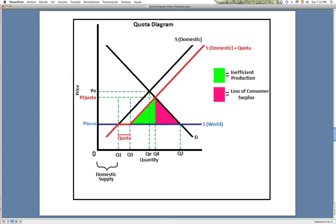The deadweight loss of welfare can be divided into two areas. The green is the inefficient production, which goes from Q3 to Q4, and the purple is the loss of consumer surplus, which goes from Q4 to Q2.